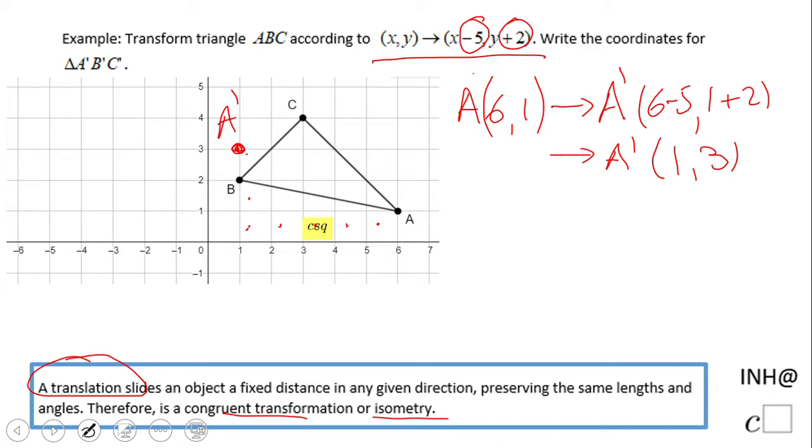We can do the same for point B. Counting one, two, three, four, five, one, two. This will be B prime. And if you do the same thing here, B prime. Let's start with B. Point B has what coordinates?